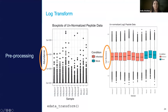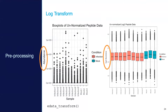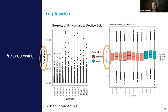Replacing zeros and NAs with a very small number falls into the same category as half the limit of detection — you're making the assumption that things are missing because they were present but not detectable, which may not always be valid.